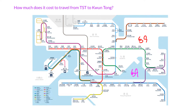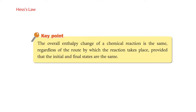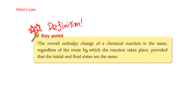For Hess's Law, you need to memorize the definition because in DSE it has come up before, in 2017. The definition of Hess's Law is: the overall enthalpy change of a chemical reaction is the same regardless of the route by which the reaction takes place, provided that the initial and final states are the same.